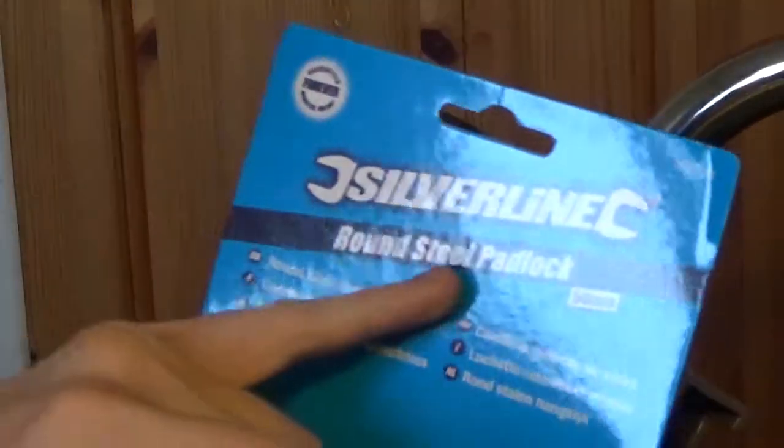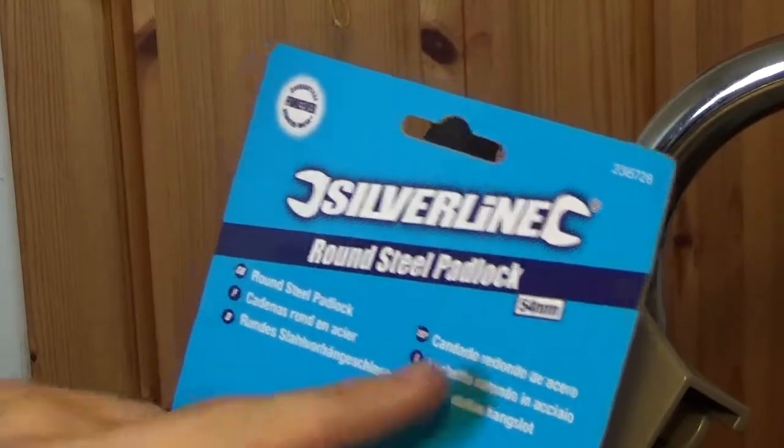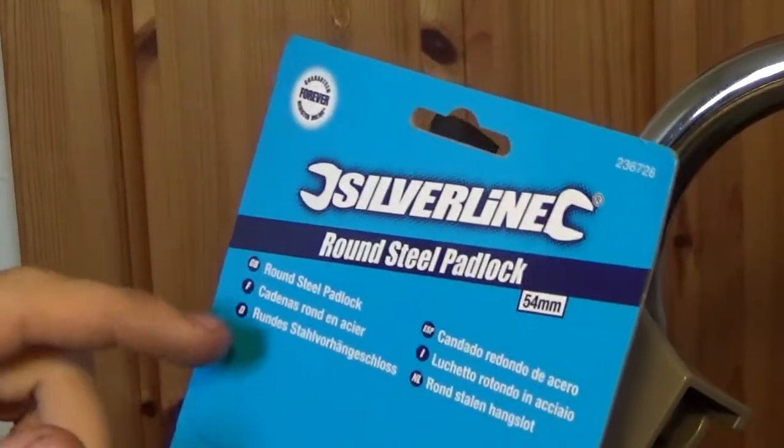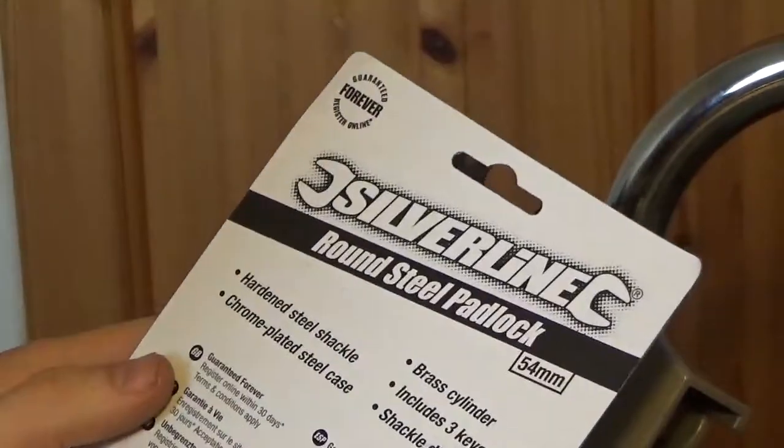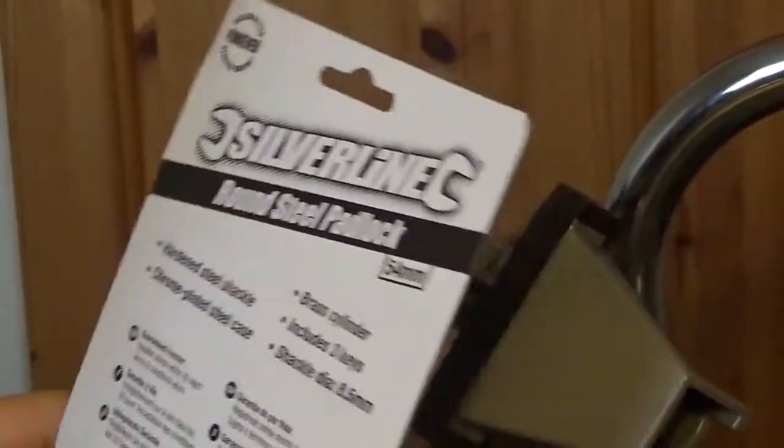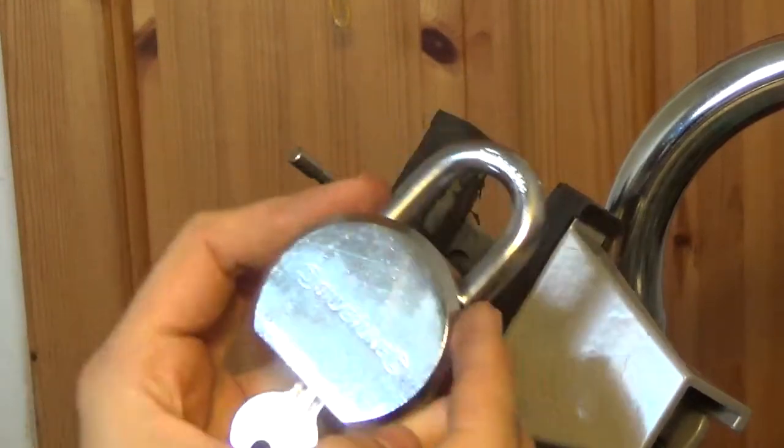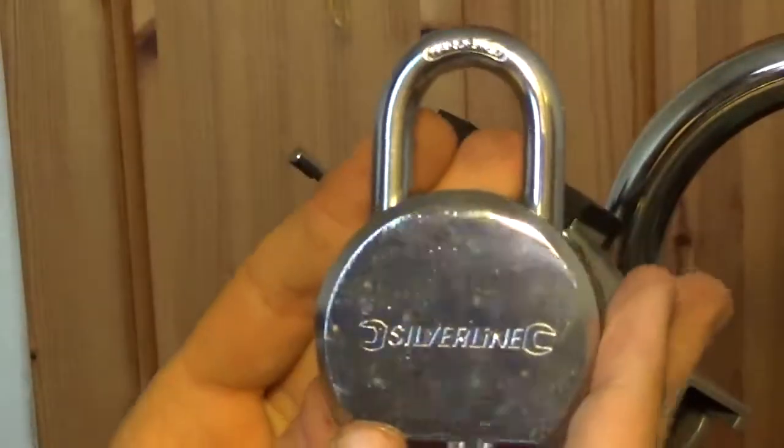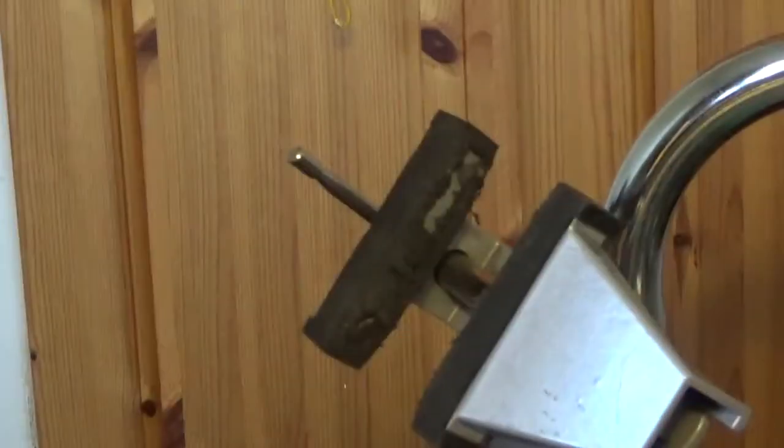It's one of the round steel padlocks. It's a 54 millimeter hardened steel shackle, chrome plated, three keys, brass cylinder. Here it is, and it has a core. The camera decides to focus again.